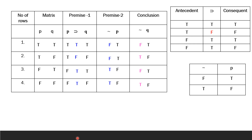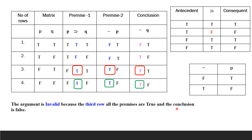We check for invalidity in every row. In the first row, the second premise is false, so no need to check. In the second row, premises are false. In the third row, both premises are true but the conclusion is false — invalidity condition found. In the fourth row, both premises are true and the conclusion is also true. Since we found the invalidity condition in the third row, the whole argument is invalid. We have completed Chapter 3 Decision Procedure. Thank you.